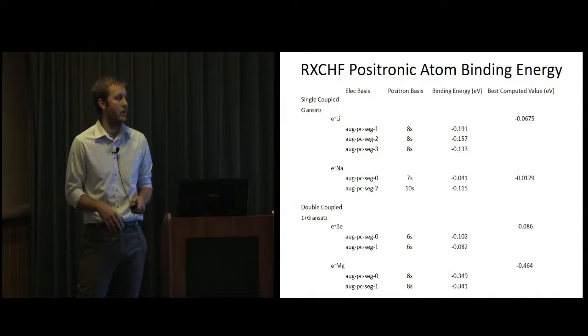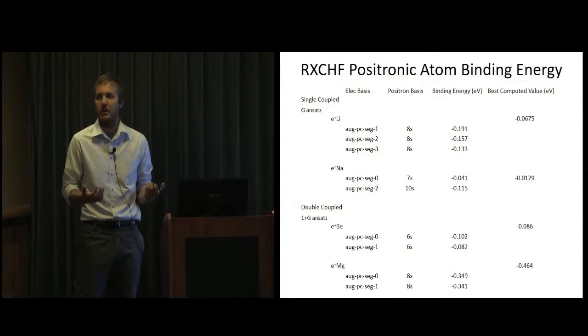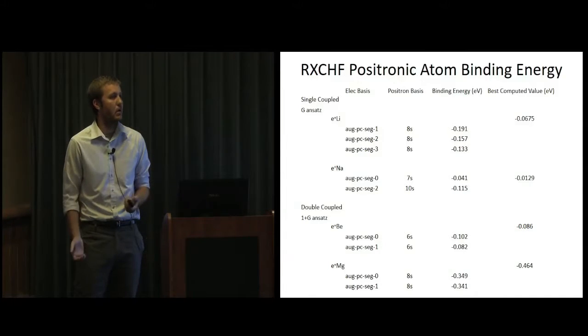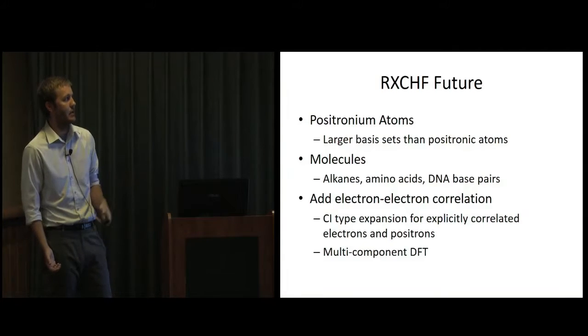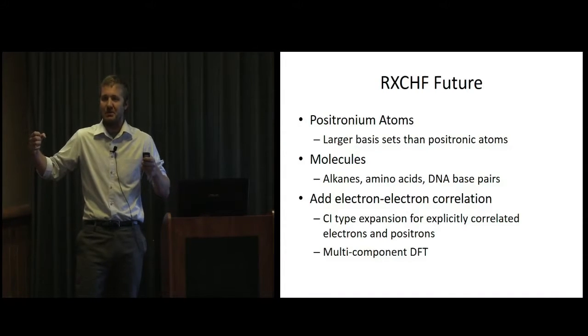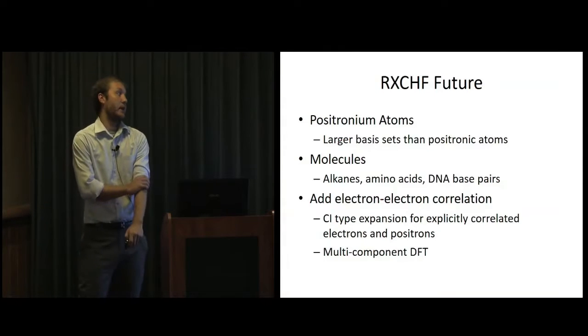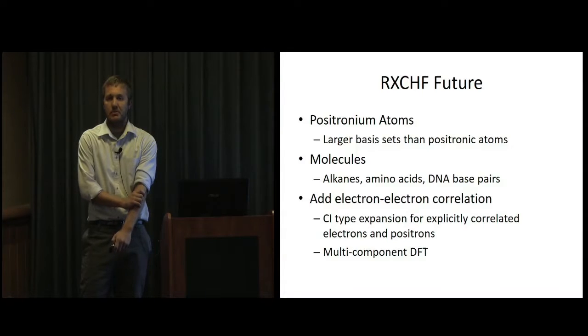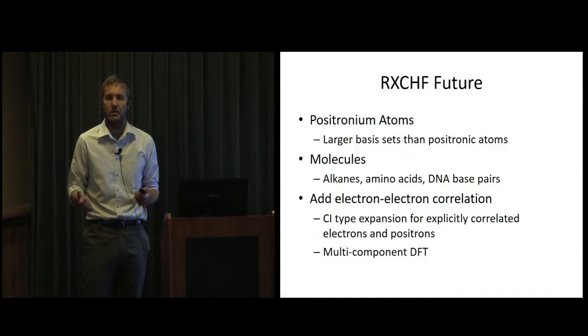So we haven't been able to move on to molecules yet. That's probably like in the next couple weeks, next month. But these lead me to believe that we should be able to do that and that we're hopeful we'll be able to do positron binding to molecules like for alkanes with an ab initio method for the first time. So RX-CHF future. So I talked about positronic atoms. Right now I'm actually running positronium atoms. And those are harder because the positronium wants to be farther from the nucleus because it's more weakly bound. So you need to use larger basis sets. And the computational expense is still tough for us. But looking into that, we want to do molecules. So we want to do alkanes. We'd like to go back and do amino acids and DNA base pairs because those were previously done with the mean field type methods that we think are only showing binding due to this dipole down the molecule. We think electron-positron correlation might play an important role in that kind of binding and see what kind of difference is.